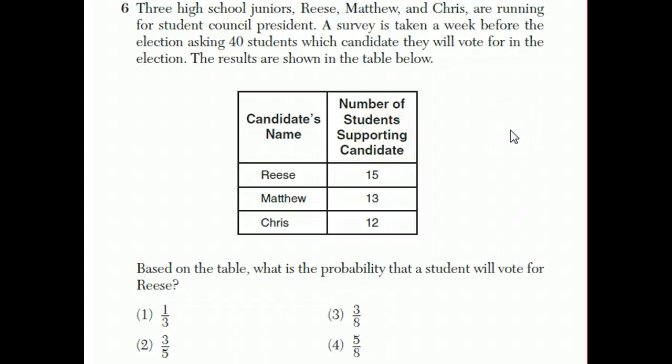Question 6 is pretty lengthy to read, but you have three juniors, Reese, Matthew, and Chris, they're running for student council president. A survey is taken a week before the election asking 40 students who they'll vote for, and here are the results. So of the 40 people, 15 say they're going to vote for Reese, 13 say they're going to vote for Matthew, and 12 say they're going to vote for Chris. And the question is, what's the probability that a student will vote for Reese?